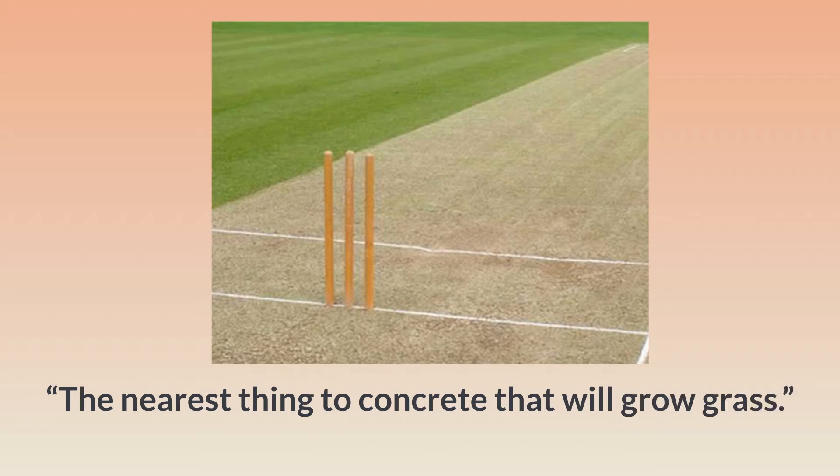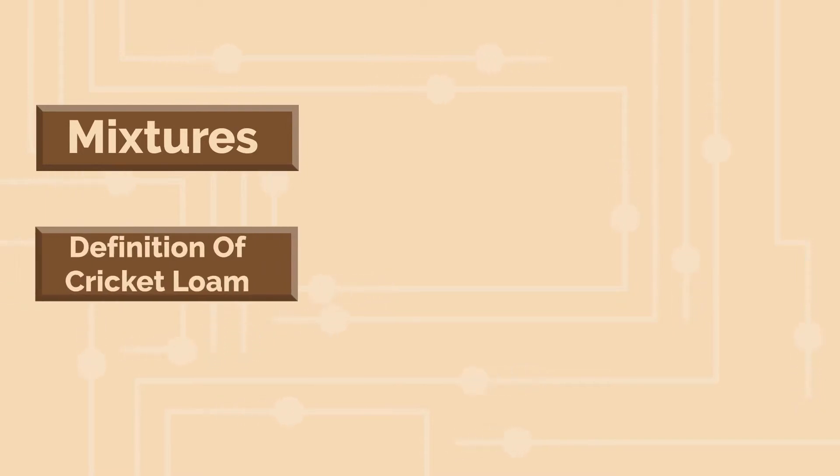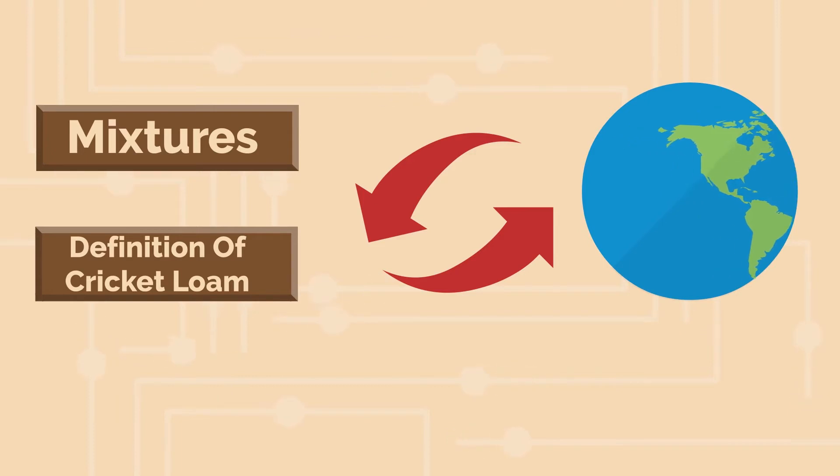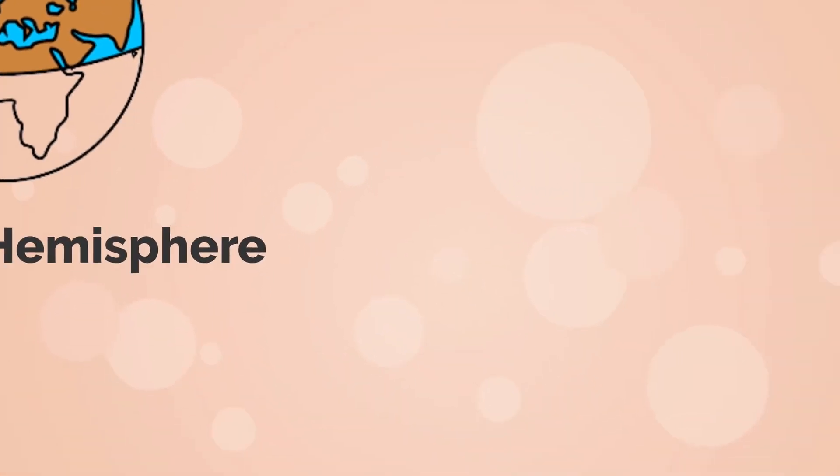be described as the nearest thing to concrete that will grow grass. The mixtures used and the definition of cricket loam can drastically change depending on which part of the world is using it. In the northern hemisphere, loam